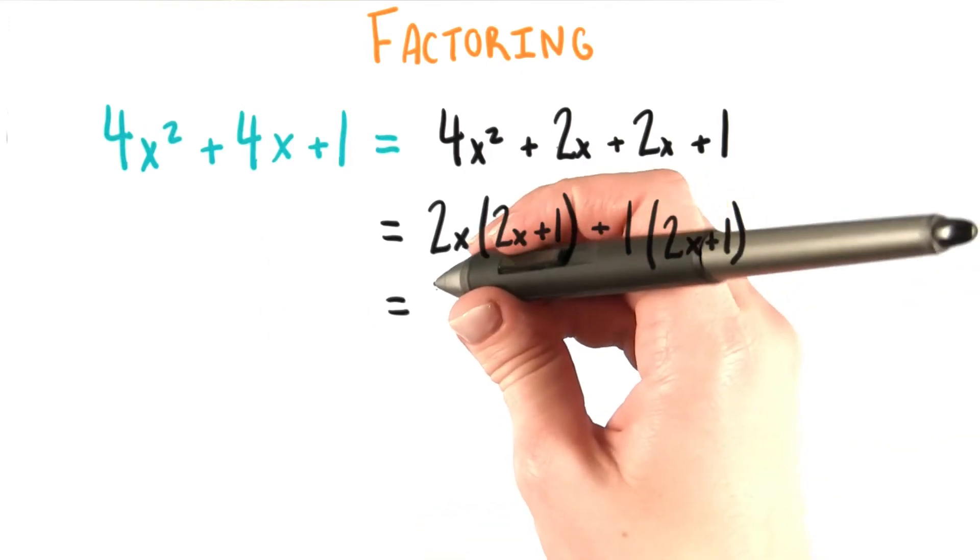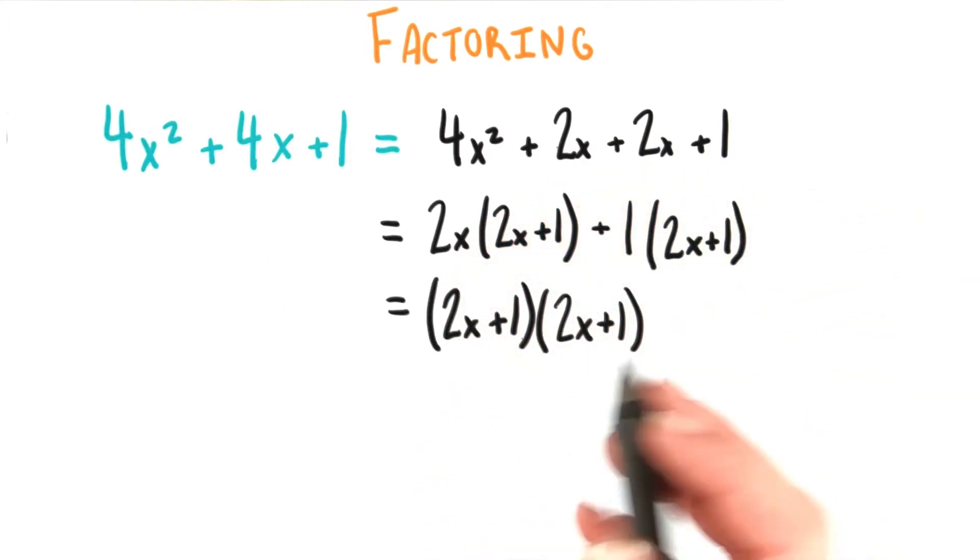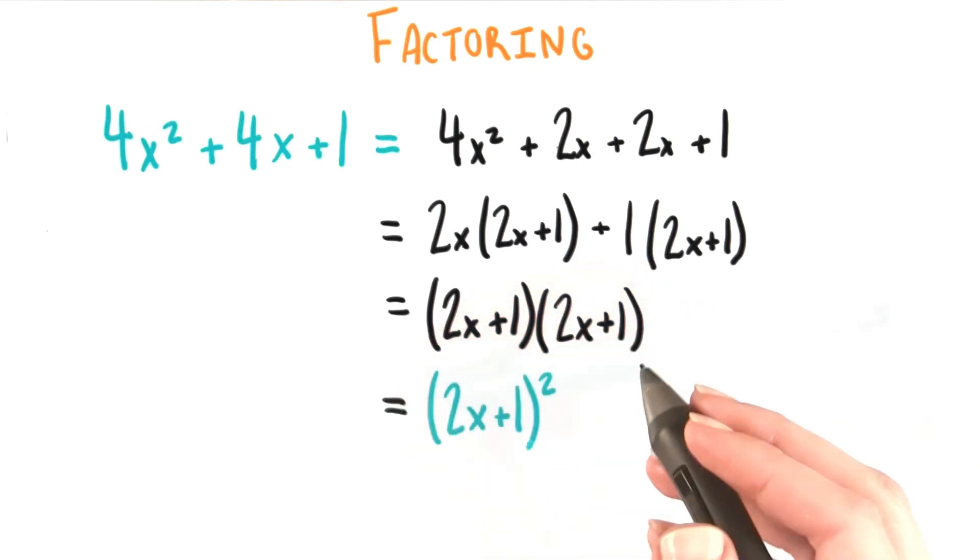Conveniently, this still works out perfectly, and we get 2x plus 1 times 2x plus 1, which we can also write as 2x plus 1, the quantity squared.